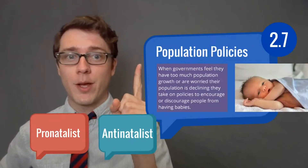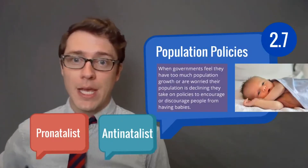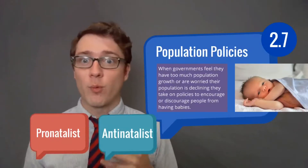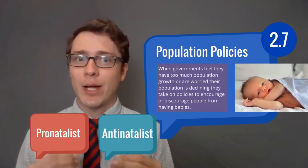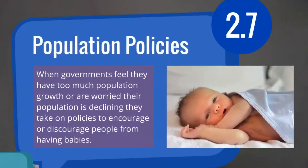Today we're going to talk about population policies, which is topic 2.7. We've spent a ton of time in this unit talking about how we measure population and why it grows. But today we're going to look at how governments feel about that growth and what they do when they disagree with how quickly their country is moving. When governments feel they have too much population growth, or are worried their population is declining, they take on policies to encourage or discourage people from having babies.